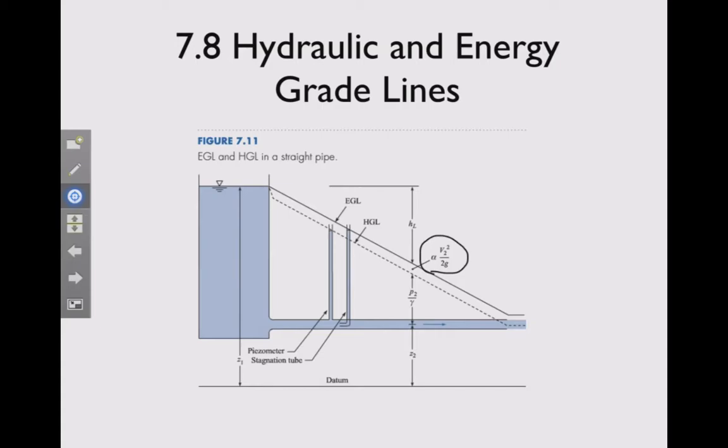So the total grade, the total energy grade line is actually a little bit more because there's still some velocity coming out the end of the pipe. So at this point, we just have the piezometric head, which is equal to the elevation head at the end of the pipe, plus a little bit of velocity head.